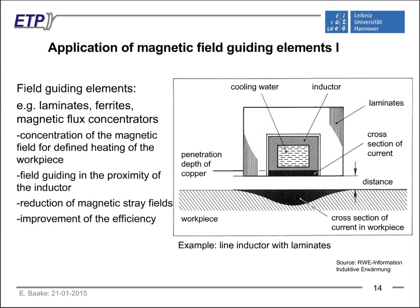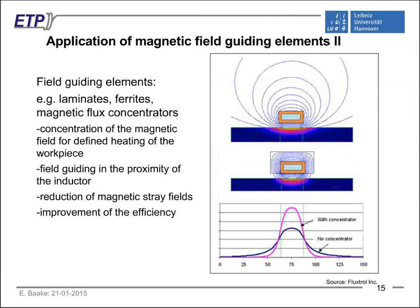Another important effect is electromagnetic field guiding elements, which can surround the copper coil — from laminates, ferrites, or magnetic flux concentrators. These field guiding elements concentrate the magnetic field for defined heating of the workpiece, guide the field in proximity of the inductor, and can be used for reduction of magnetic stray fields and improvement of total efficiency. When magnetic flux concentrators are used, the magnetic field is concentrated near the inductor coil itself, and we can increase the power density induced in the workpiece under the inductor, making this a very important design element.